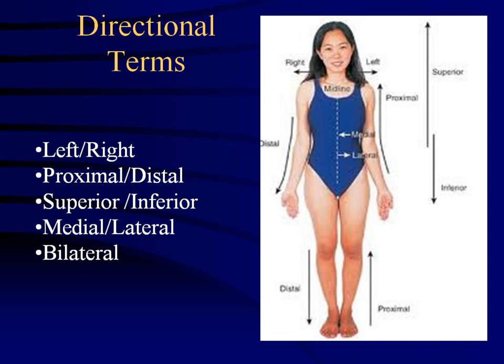Proximal versus distal: proximal basically means toward the core; distal means away, and it's always in relation to another structure. So my fingers are distal to my wrist, but the wrist is proximal to the fingers. Don't necessarily think of it in terms of above — think of it as closer to the core. So the fingers are distal to the wrist, and the wrist is proximal to the fingers.